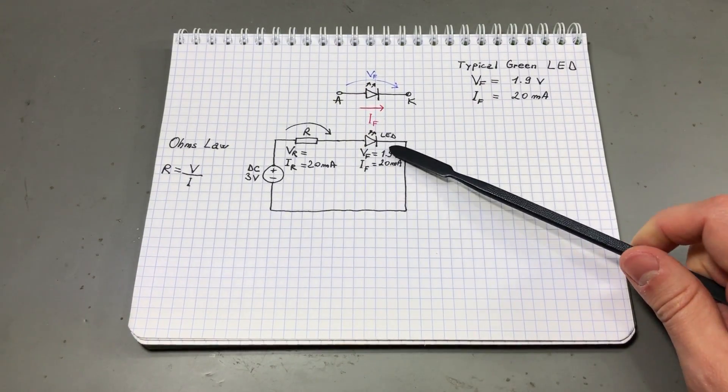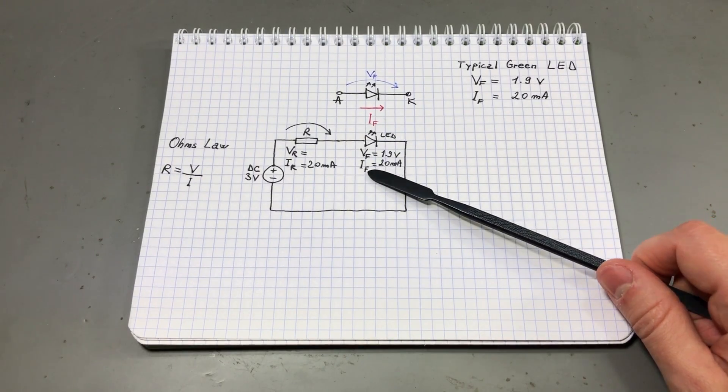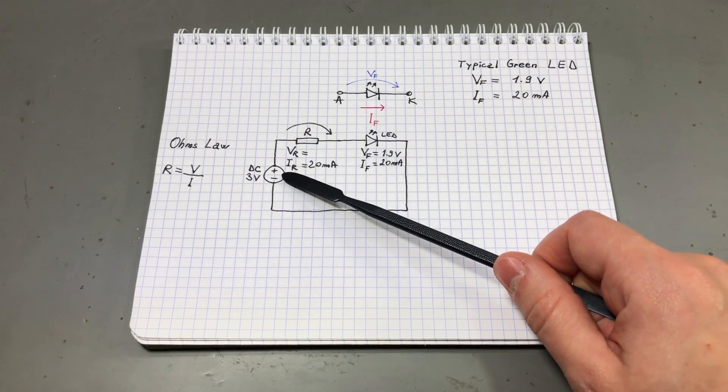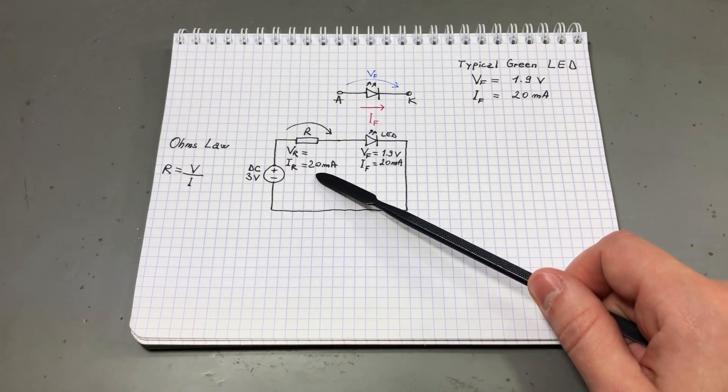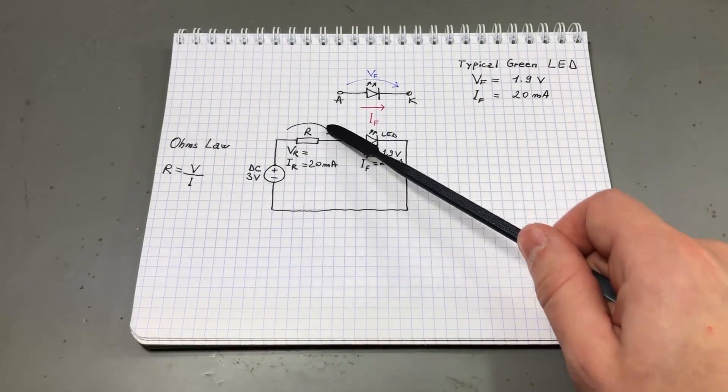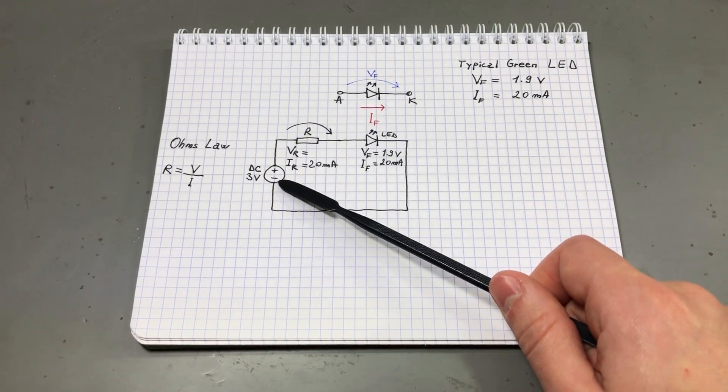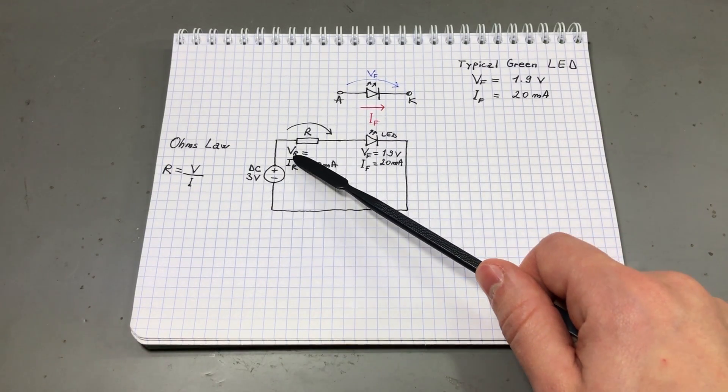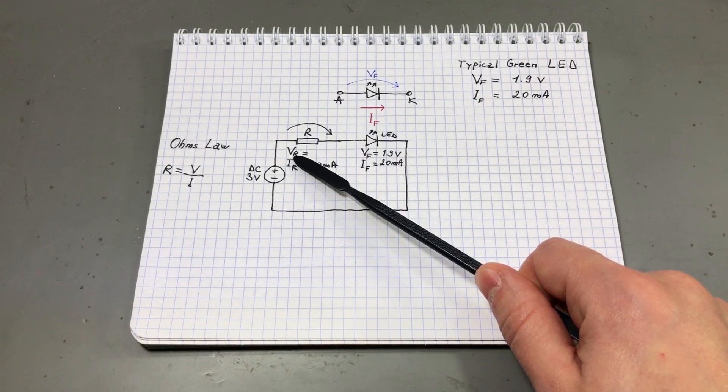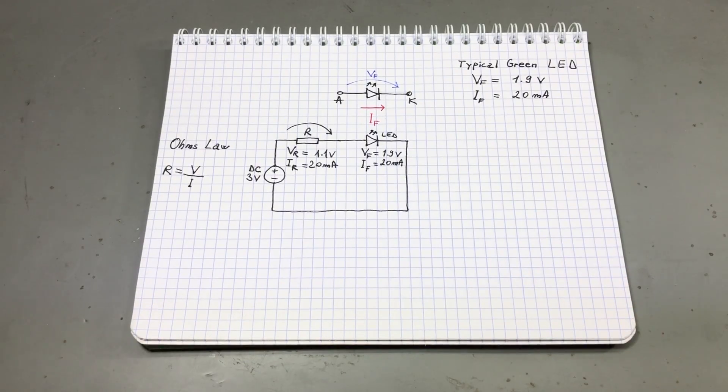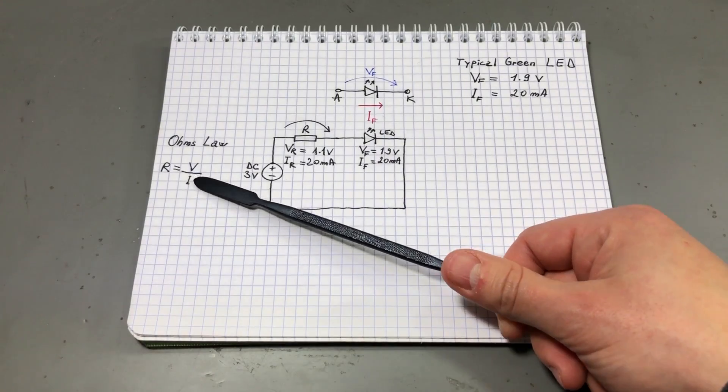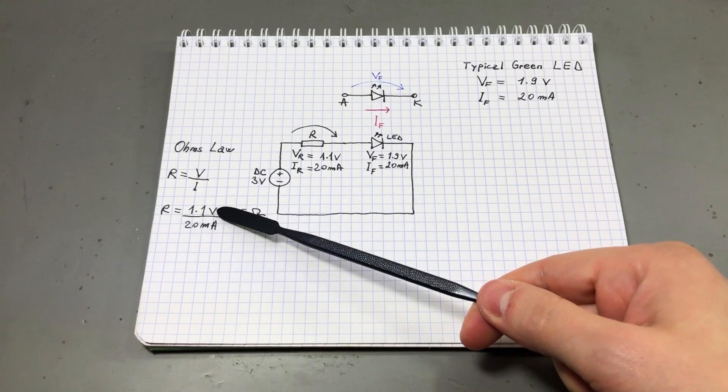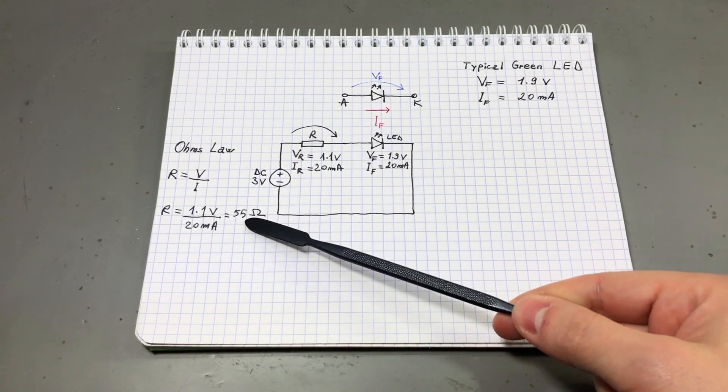We know the LED has a forward voltage of 1.9 volts and a forward current of 20 milliamps. That means the same current will pass through our resistor. So IR is also equal to 20 milliamps. To calculate the voltage drop on our resistor, we need to subtract from the supply voltage the forward voltage of the LED. So VR in our case will be equal to 1.1 volts. We can now calculate the value of the resistor using Ohm's law. R equals V over I.